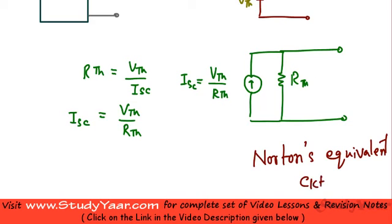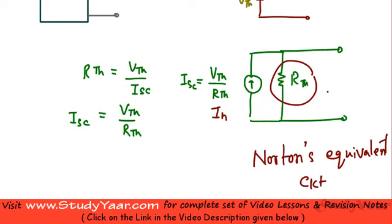This particular current source is known as your Norton's current, IN. IN is equal to your Isc, and this particular resistance is known as your equivalent Norton's resistance, Rn, which is equal to your Rth.